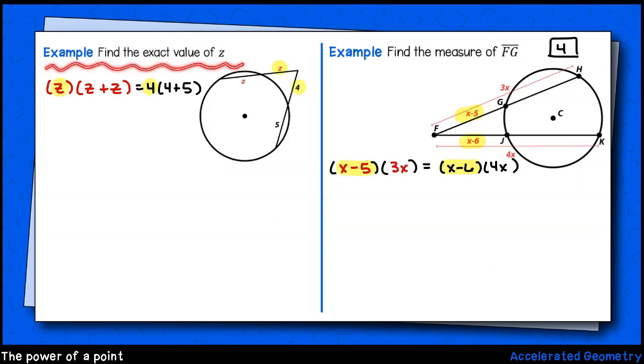Let's take a look at the example on the left. We're finding the exact value of z. Notice we have two secant lines. So this is an example of case 2. We'll multiply the outer segment by the sum of the inner and outer segments. That's z times z plus z. For the other secant line, again, we multiply the outer segment by the sum of the inner and outer segments. That'll be 4 times 4 plus 5. I'll go ahead and start simplifying here. z plus z gives 2z, and 4 plus 5 gives 9.